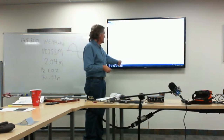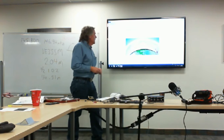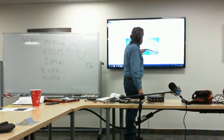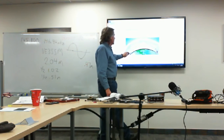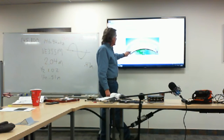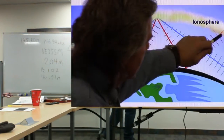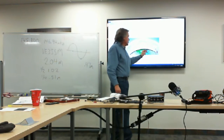Multi-hop propagation is when your radio signal goes up into the ionosphere, comes back down, reflects off the earth's surface, goes back up again, and comes back down again. Here's our radio tower, and the signal hops through the ionosphere multiple times to reach the station at the other end. That's multi-hop propagation — it hopped a few times, and usually this covers a very great distance.